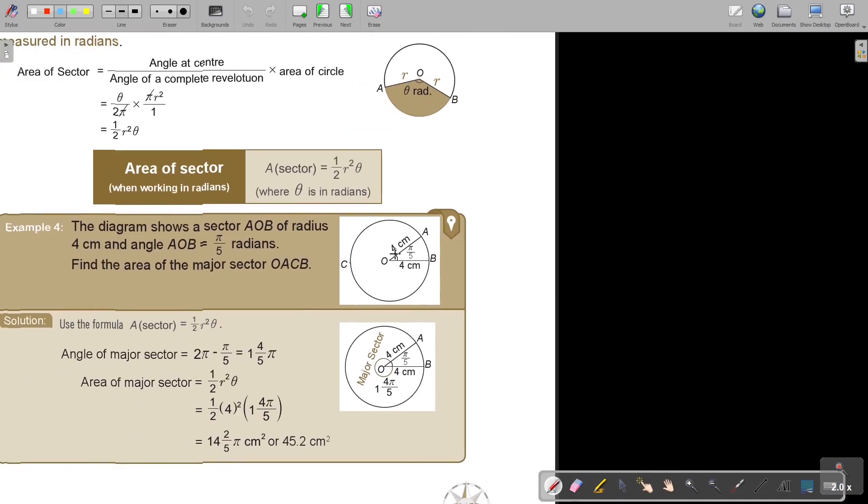So what we first do is we're going to work out this angle. So if this is π/5, then I take 2π and I subtract π/5, and then it's 1 and 4/5 π. That is going to be the major angle. And then the area of the major sector, I just substitute.